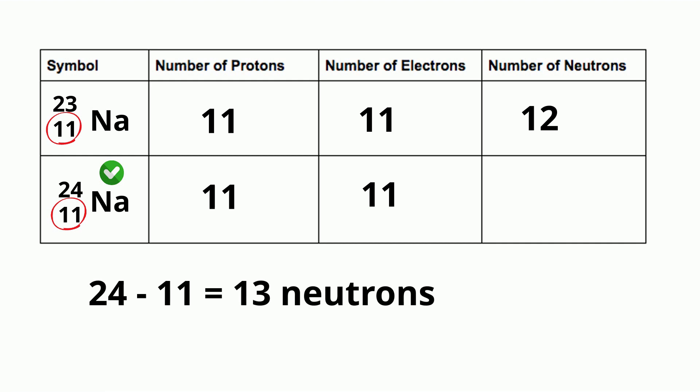The second sodium, sodium 24, has a mass number of 24. Subtract the atomic number of 11 and it equals 13 neutrons.